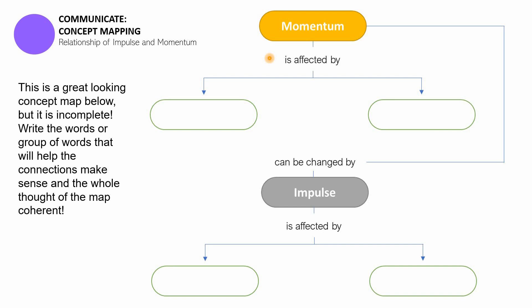You may pause it now. If you're through, let's now proceed with the answers. Momentum, as we know, is affected by mass and velocity — remember that p is equal to mv, so momentum is the product of mass and velocity. Momentum could be changed by impulse, and impulse is affected by force and time — that's I is equal to Ft. I hope you got all four of those missing terms correctly.